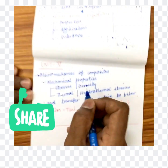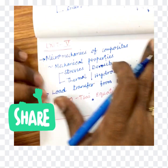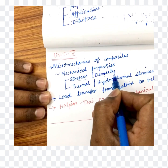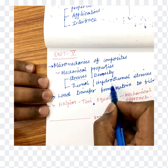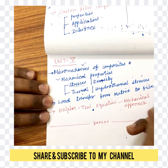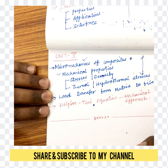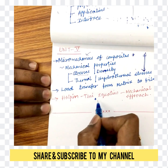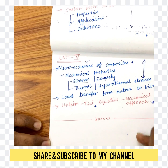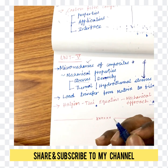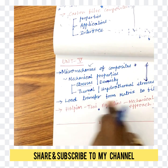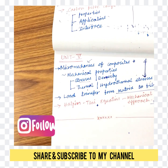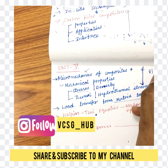Unit 5 is completely different and not connected to the earlier units. It covers mechanical properties like stresses, density, thermal stresses, and hydrothermal stresses of micromechanics. You may expect one question from Unit 5. The Halpin-Tsai equation is one mechanical approach that may be asked, and a problem based on this may appear in mid-exams. Load transfer from matrix to fiber is also an 8 or 7-mark question. These may be split into parts A and B.